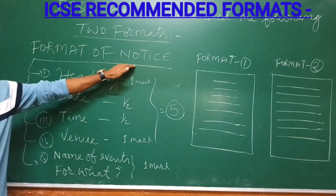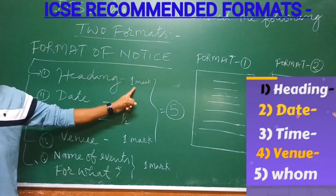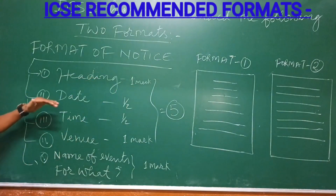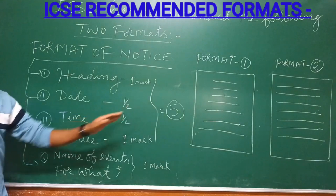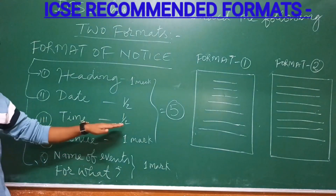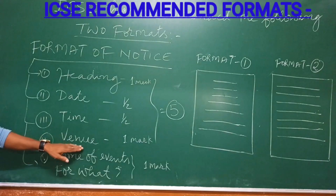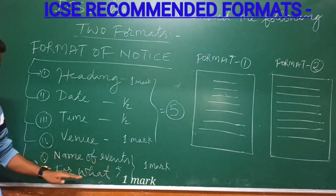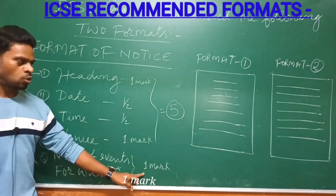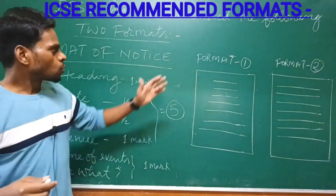ICSE has recommended two formats for notice writing. The format components are: first, heading, which carries one mark; then date, which carries half a mark; time, which carries half a mark; venue — the place where the event will take place — which carries one mark; and finally the name of the event and purpose, which carries one mark. So notice writing carries five marks total, and you can easily score five marks.